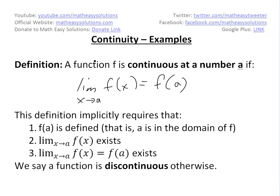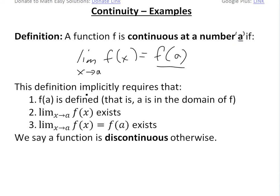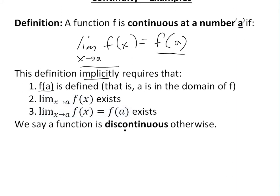Just to recap quickly: a function f is continuous at a number a if the limit as x approaches a of f(x) equals f(a). This definition implicitly requires three things: f(a) is defined (a is in the domain of f), the limit as x approaches a of f(x) exists, and these two are equal to each other. A function is discontinuous otherwise if these three requirements aren't met.